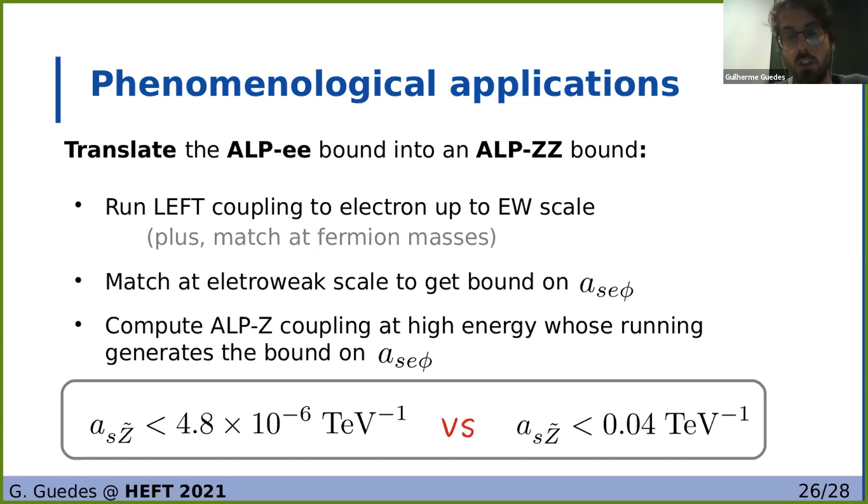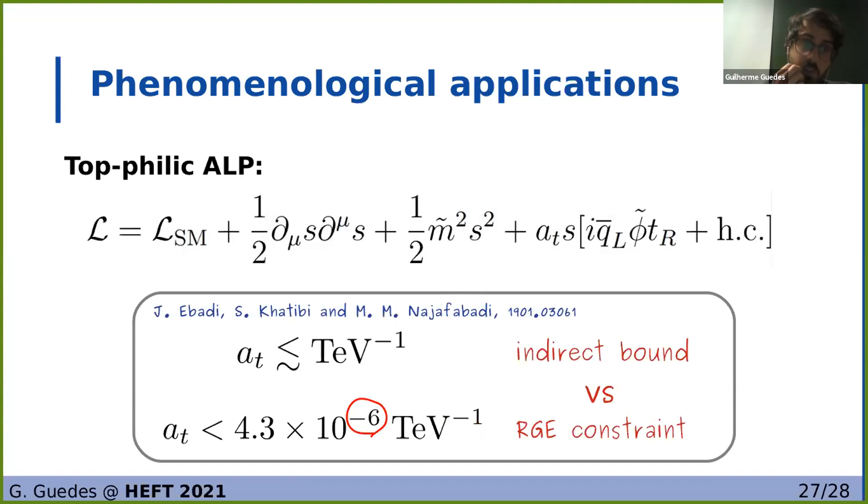We also do the same thing for the case of a top-philic ALP, so in the case that we only generate in the UV coupling to the top quark. But as we saw due to that intergenerational mixing, we also have the generation of the coupling to the electrons through running. So again we can use the bound for the anomalous cooling of red giants and we see that we get a bound on this coupling to the top quark which is again much better than the bounds that we found in the literature.